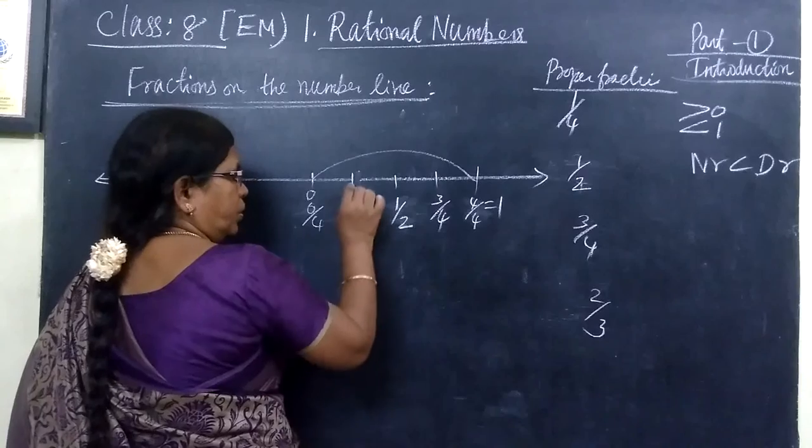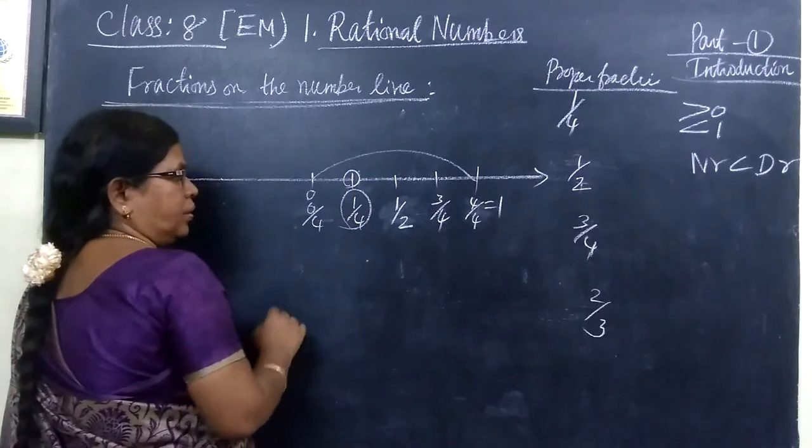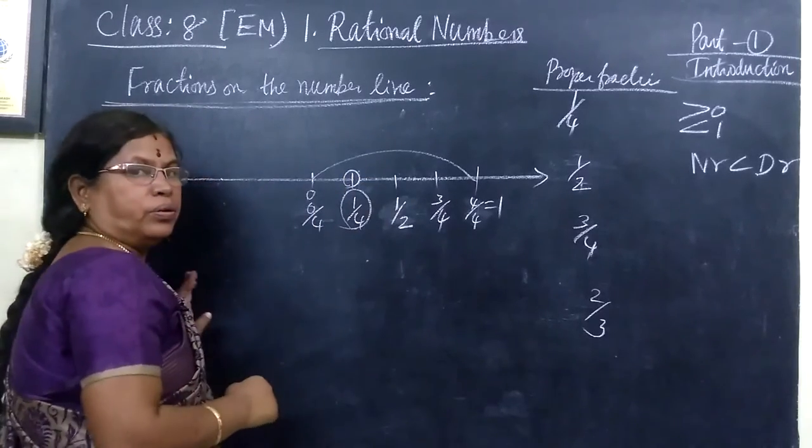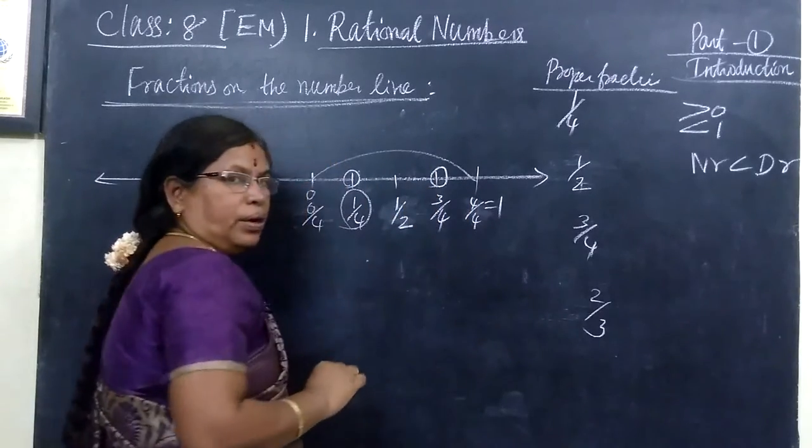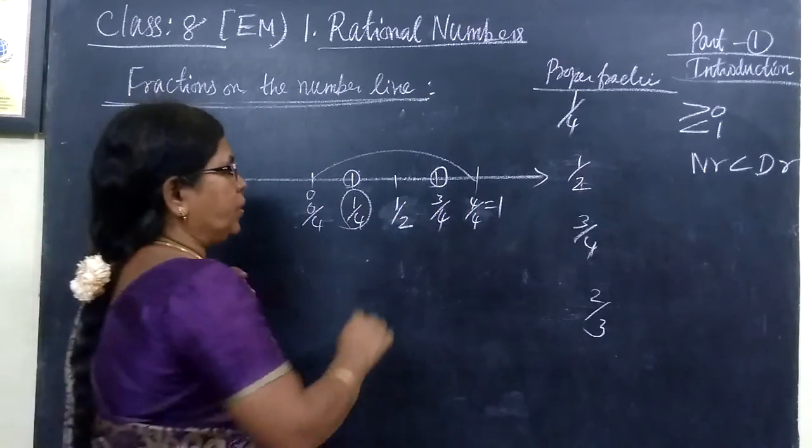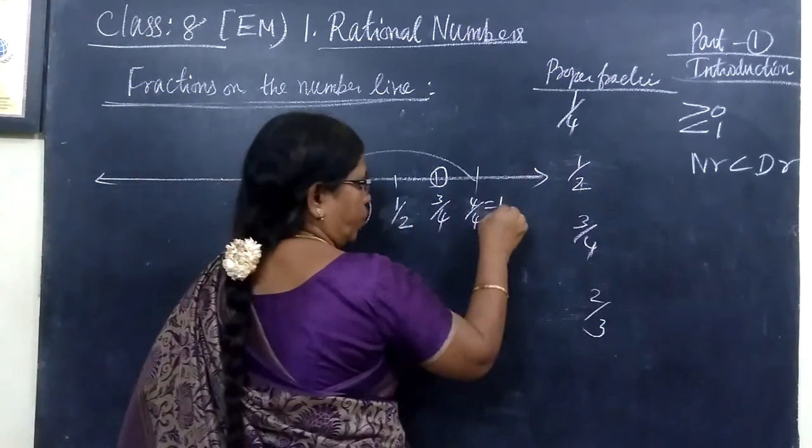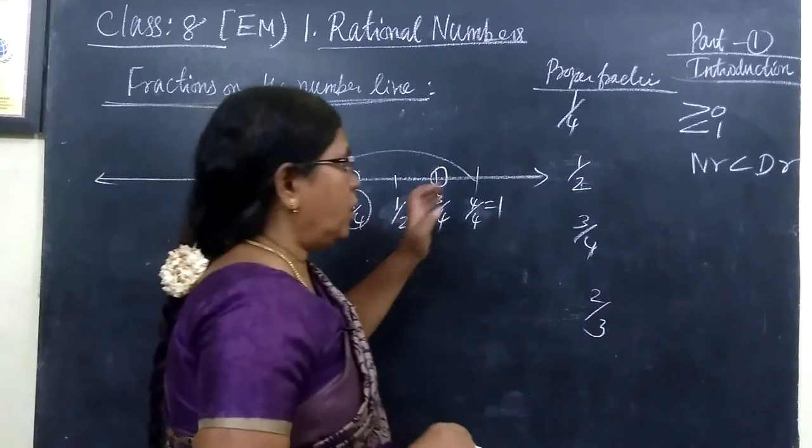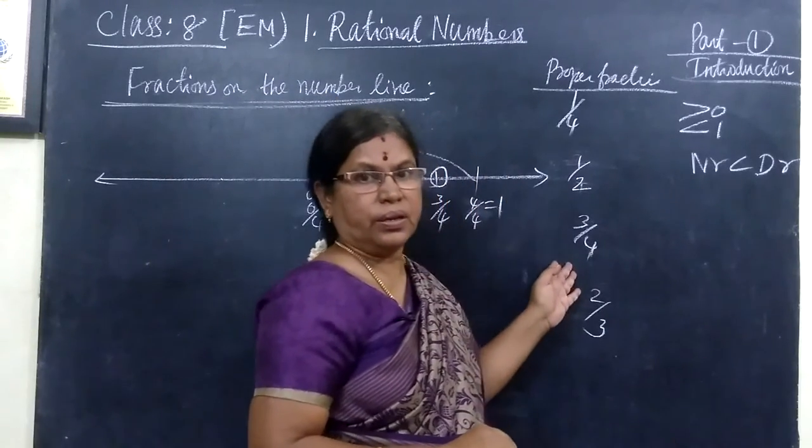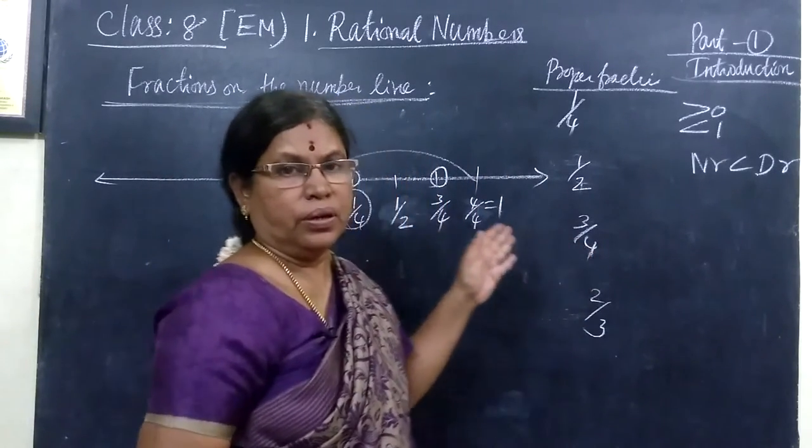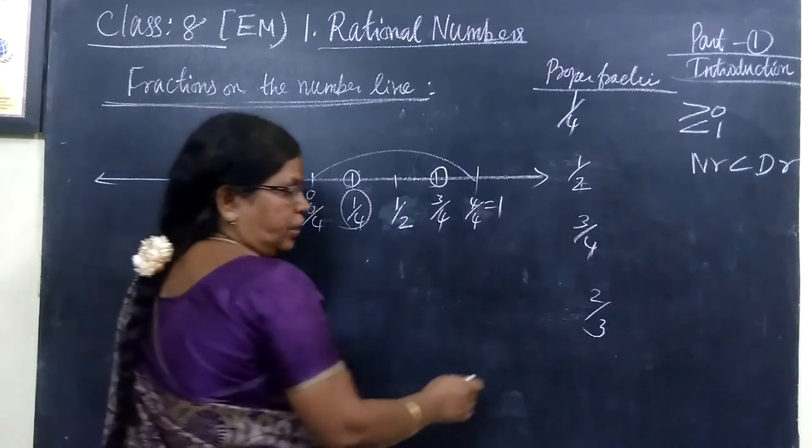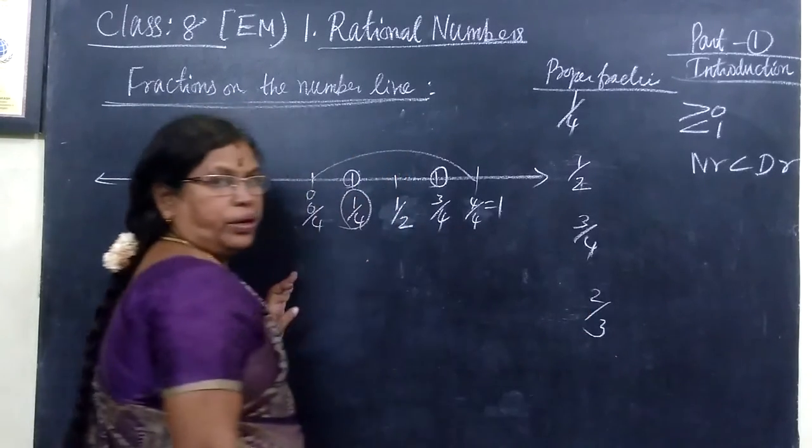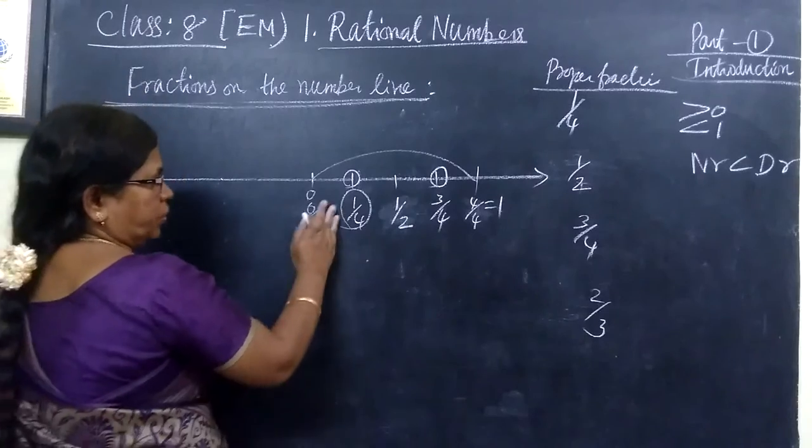This 1 by 4 it lies at the middle between 0 to 1 by 2. And 3 by 4 lies at the middle between 1 by 2 to 1. So all these fractions are very easy. These are very numbers. So that we can mark it easily. Suppose you want to take it 2 by 3. How can you mark it on the number line?